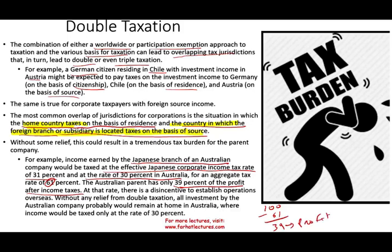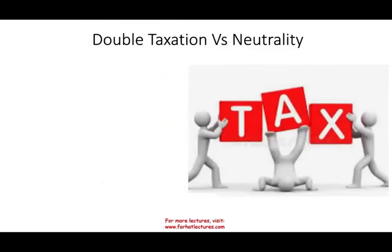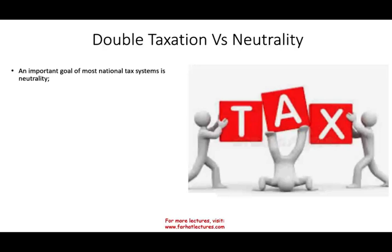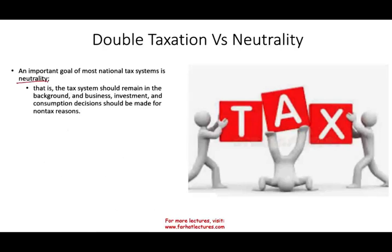At a combined tax rate of 61%, there is a strong disincentive to establish operations overseas. So we need solutions to double taxation — otherwise companies would not operate internationally and there would be less foreign investment. The concept of neutrality is important here: a tax system should remain in the background, and business investment and consumption decisions should be made for non-tax purposes. The tax system should not influence your investment or business decisions — it should be neutral.